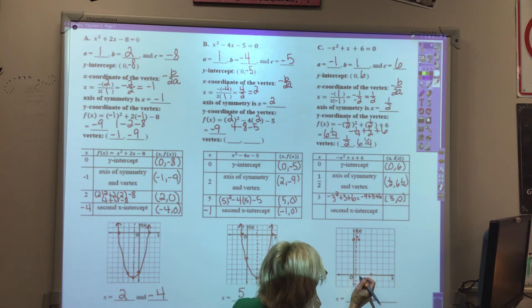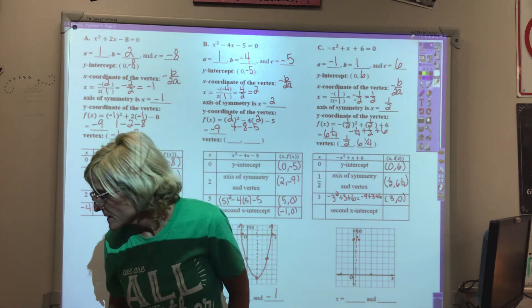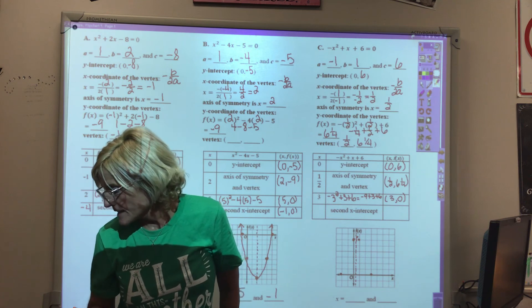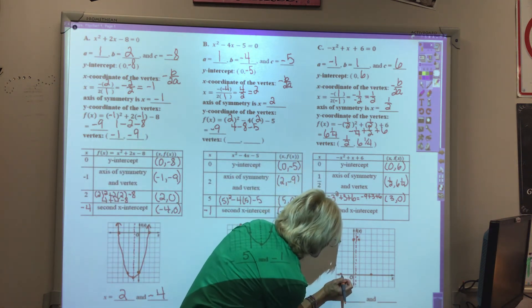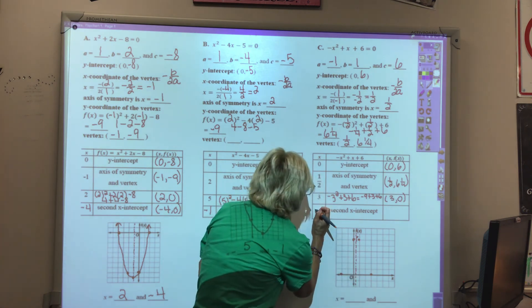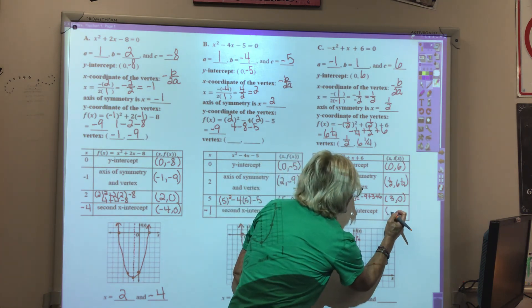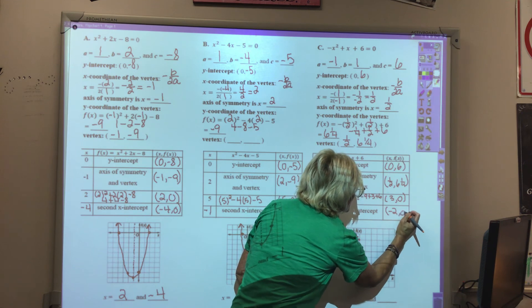On this side, we're going to be over in here a little ways. It should be at negative 2. Let's just call it negative 2, 0.